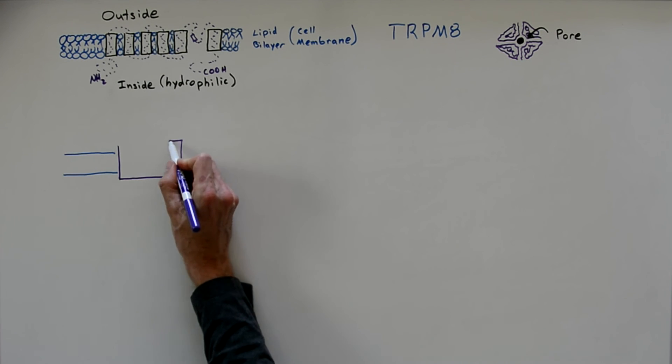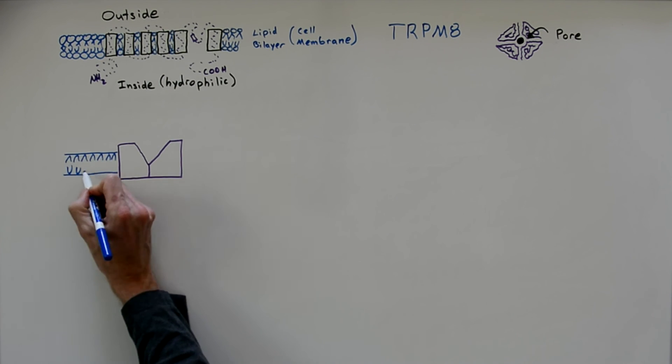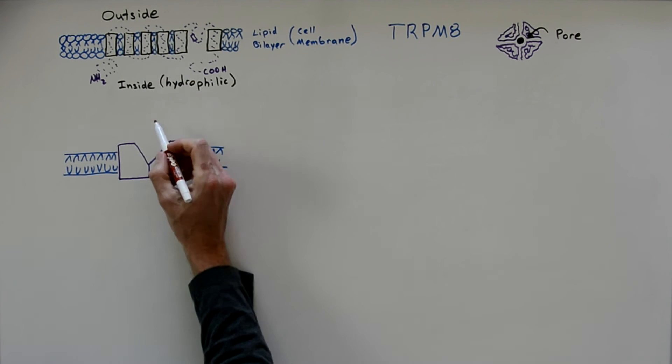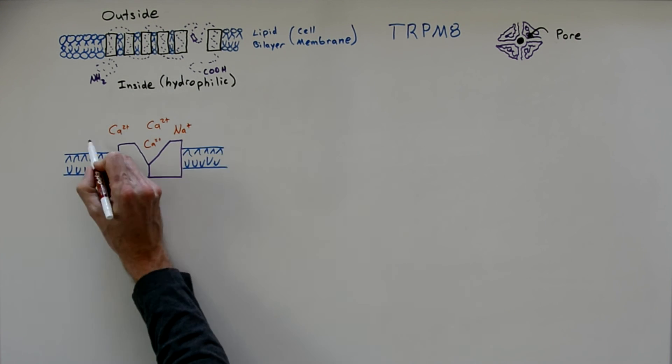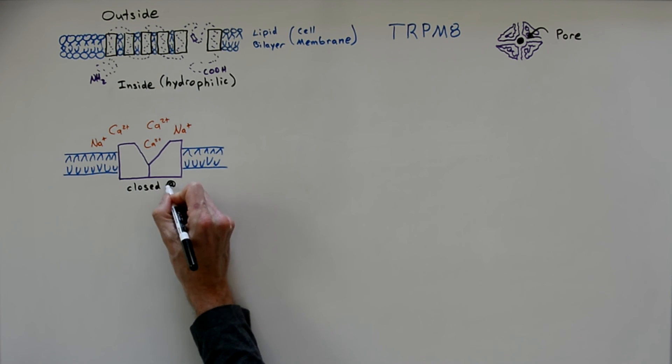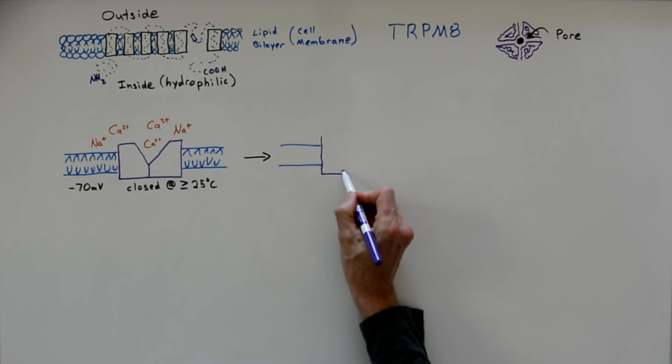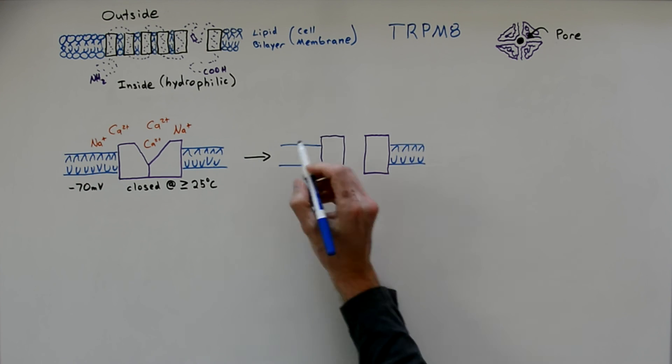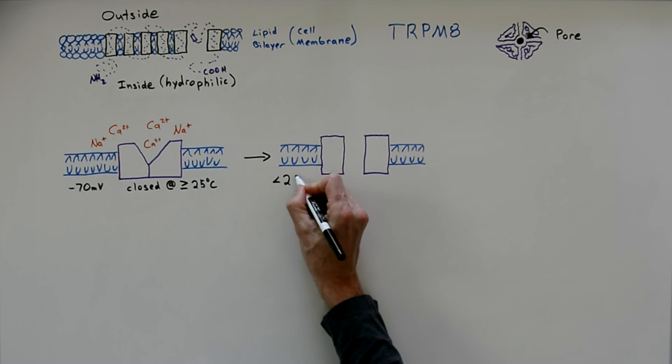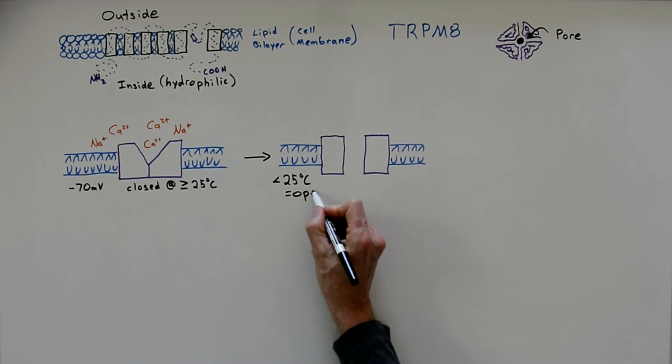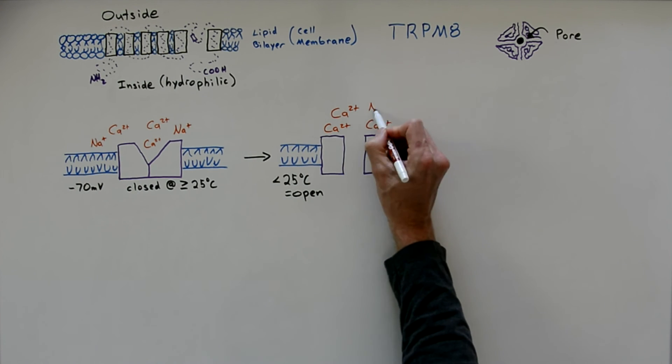So if we take a cartoon of how this tetramer functions, you can see that it's normally closed in the membrane, where the cations, the calcium and the sodium are outside the cell, and they would like to come inside the cell and flow down their concentration gradient, but they can't. And at 25 degrees or above, it's closed.